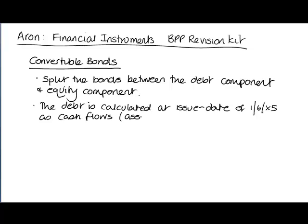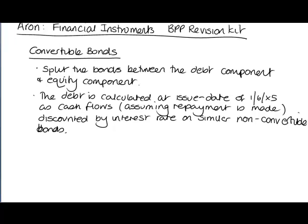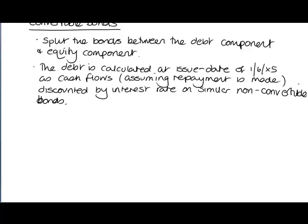The debt is calculated as the cash flows, assuming that repayment is made, discounted by the interest rate on similar non-convertible bonds. I've seen that there are six marks available, so that gives me a rough idea of the amount to write. I'm probably thinking two marks for the discussion and four marks for the calculations.